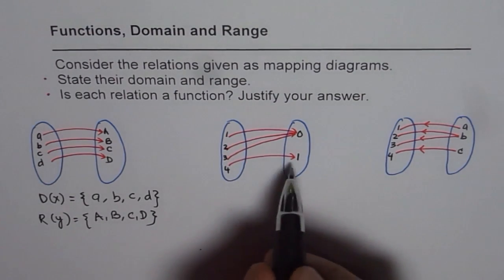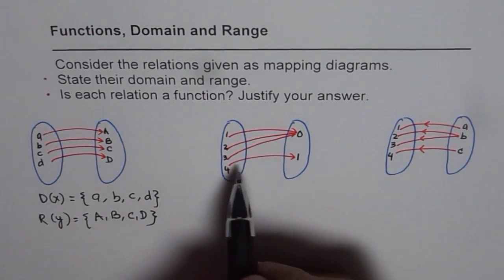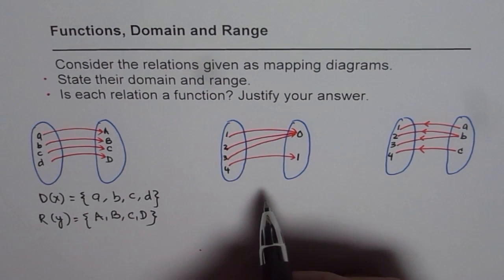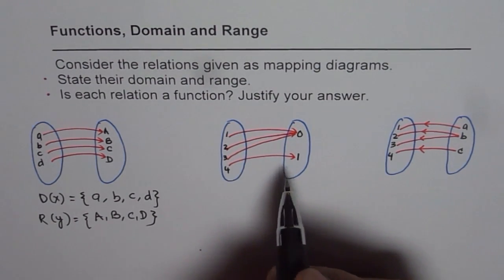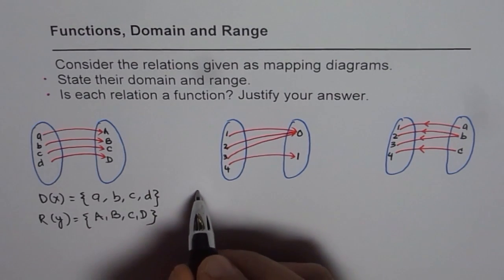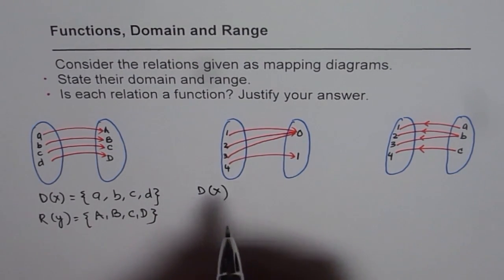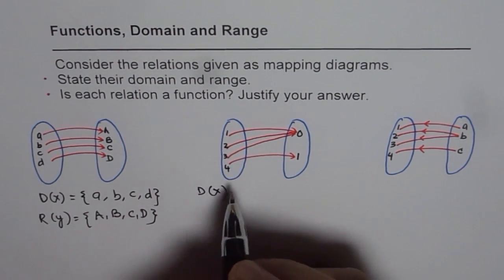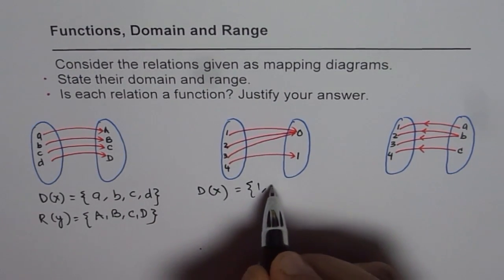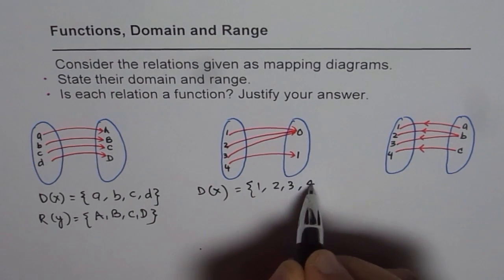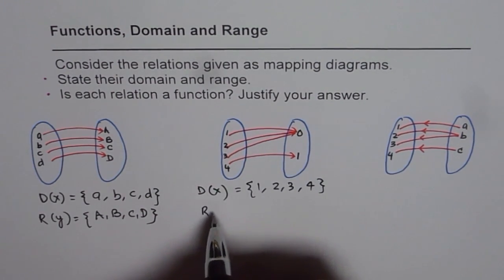Now since it is a function, we can also write down for relational, so it is a function for sure. Now let us write down domain and range for this. Domain is the set of inputs which are 1, 2, 3, and 4. So in this case domain is {1, 2, 3, 4} and the range is...